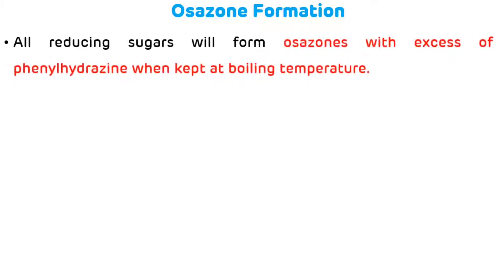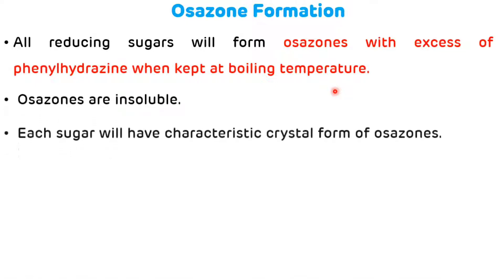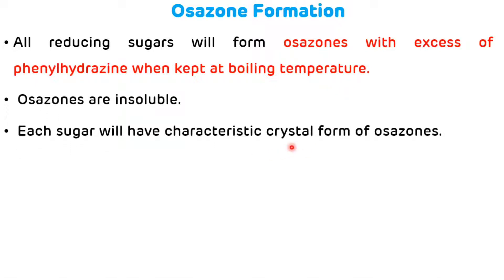Osazone formation: all reducing sugars will form osazones with excess of phenylhydrazine when kept at boiling temperature. Sucrose will not form osazone because sucrose is a non-reducing sugar. These osazones are insoluble, and each sugar will have a characteristic crystal form of osazone, which is why the osazone test is useful for the identification of sugars.